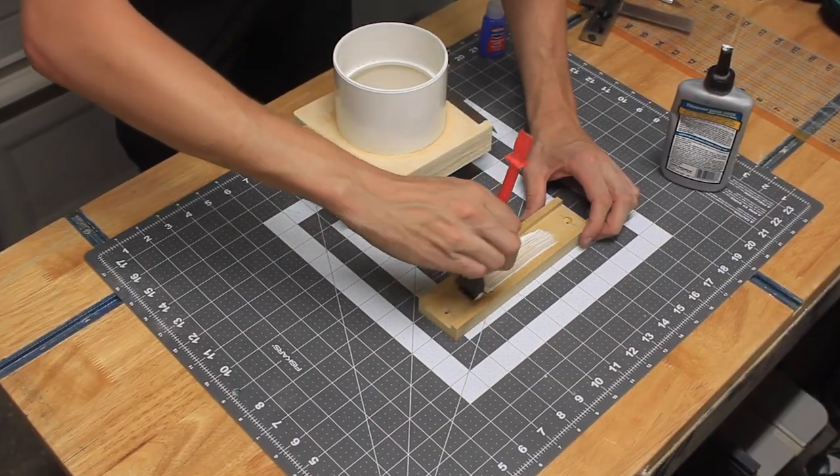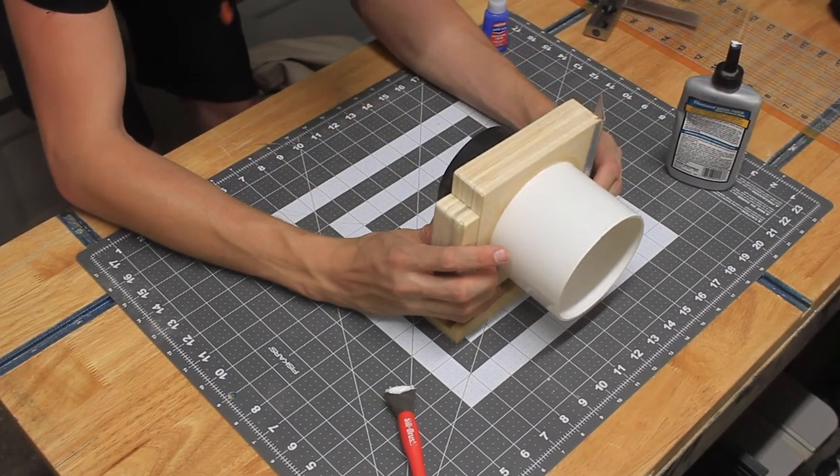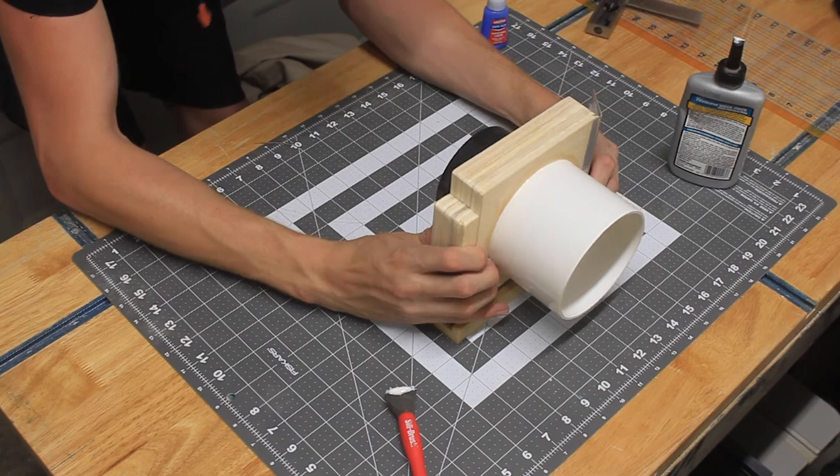With the blast gate finished, all I had to do was glue it into the MDF wall bracket, and I also applied some paste wax to the exterior.